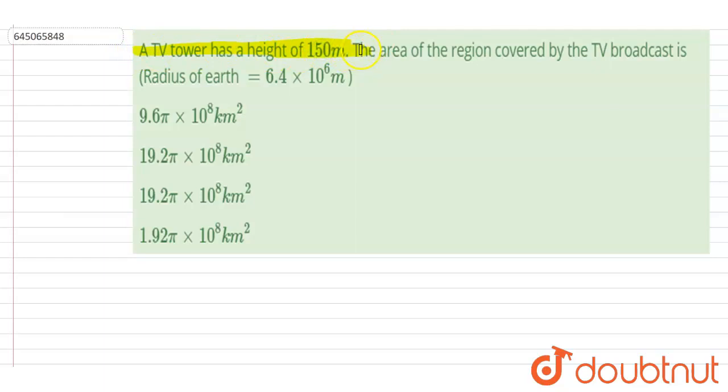a height of 150m. Area of the region covered by TV broadcast is—so if I talk about the distance from the tower up to which the signal will be received, it is √(2hR). This will be the distance.